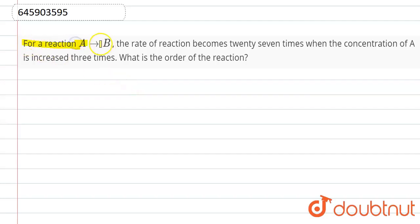a reaction A converting to B. The rate of the reaction becomes 27 times when the concentration of A is increased three times. What is the order of the reaction? First of all, we have given that A is converting to B.